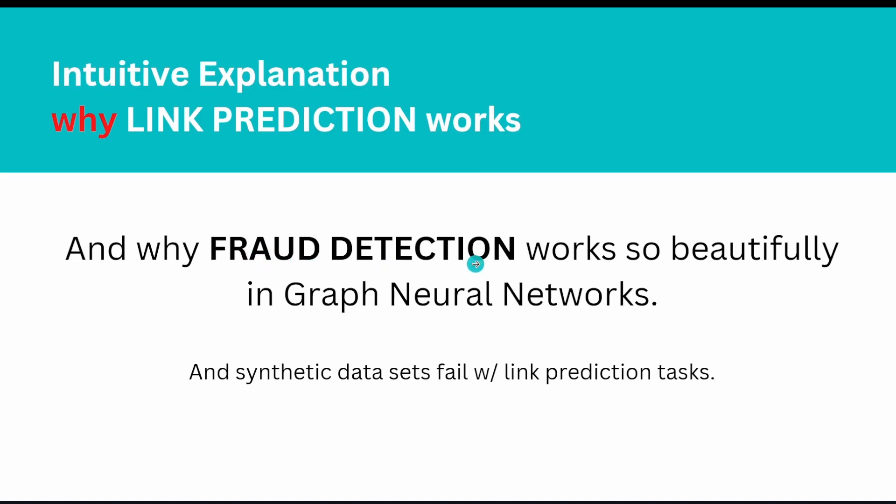You build recommender systems, graph networks where link prediction works. But link prediction doesn't work because of some miracle mathematical formula - yes, it's beautiful mathematics, but the reason is there's a hidden relation in real-world data. This is why fraud detection works so beautifully in graph neural networks for cybersecurity or credit card fraud. You have the structural information of the graph, the interlinks, and the rich content in your specific feature tensors that belong to each node or even in the edge feature tensors.